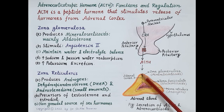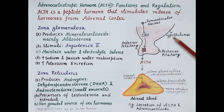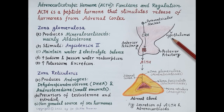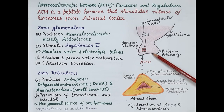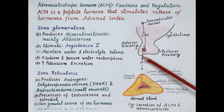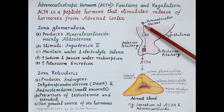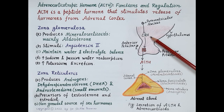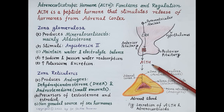The hormones released are mineralocorticoids, glucocorticoids, and androgens. Now look at this figure — this is a zoomed view of the hypothalamus, which is located towards the base of the brain, and this is the pituitary gland located just below the hypothalamus. The pituitary gland has two lobes: this is the anterior pituitary and this is the posterior pituitary. The paraventricular nucleus of the hypothalamus secretes corticotropin-releasing hormone, in short CRH.